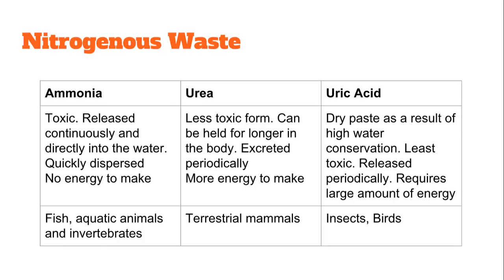Urea is a less toxic form than ammonia. It can be held for longer in the body — we store it in our bladder — and can be excreted periodically. However, it requires more energy to produce than ammonia. Urea is typically produced by terrestrial mammals.